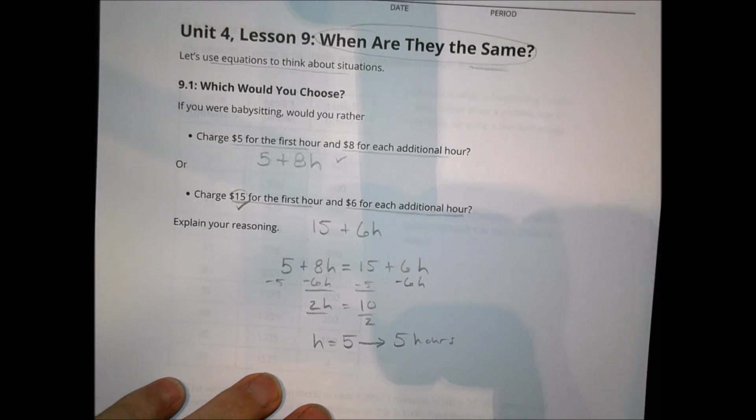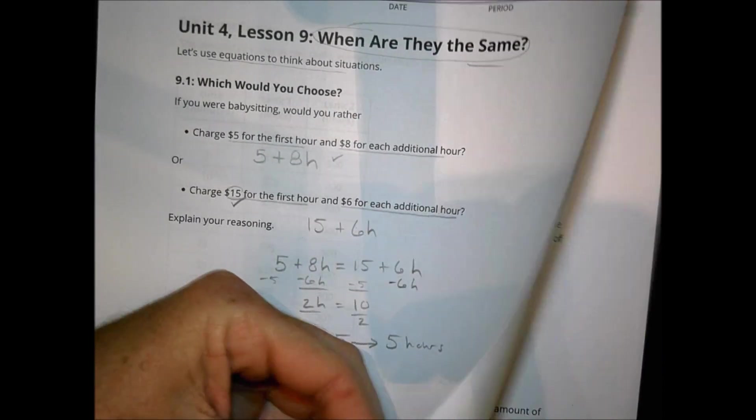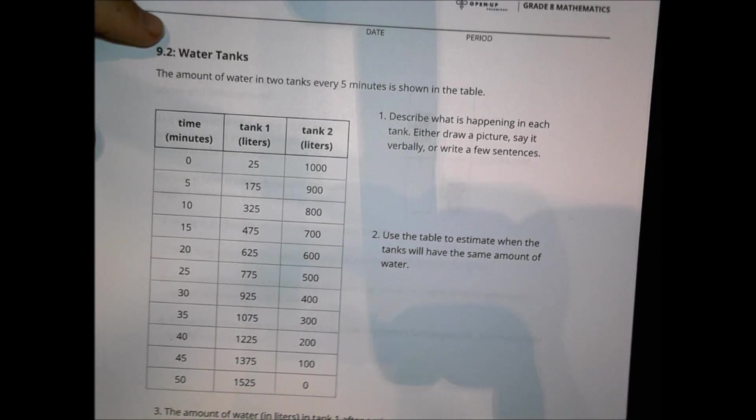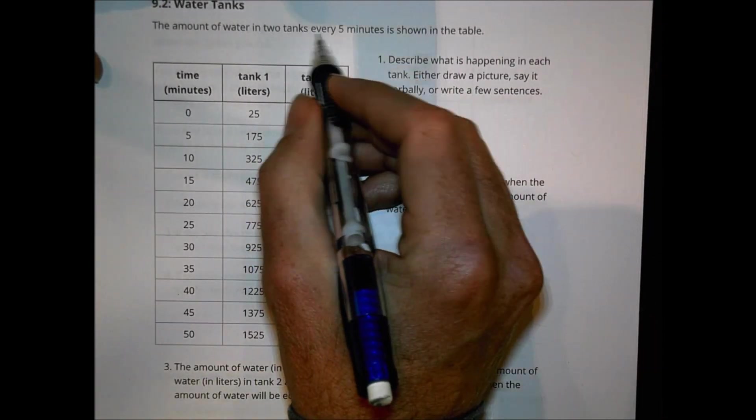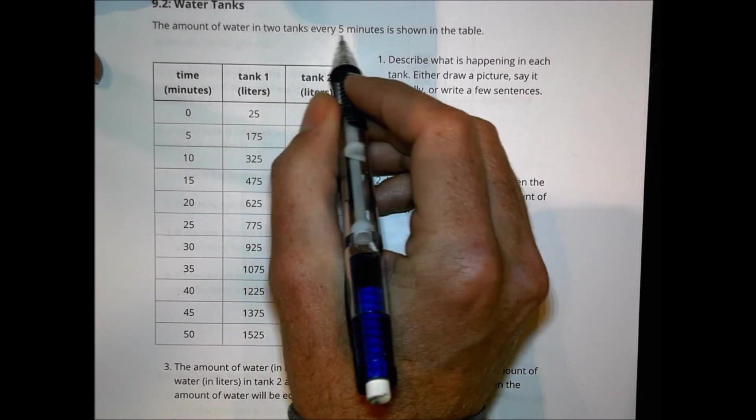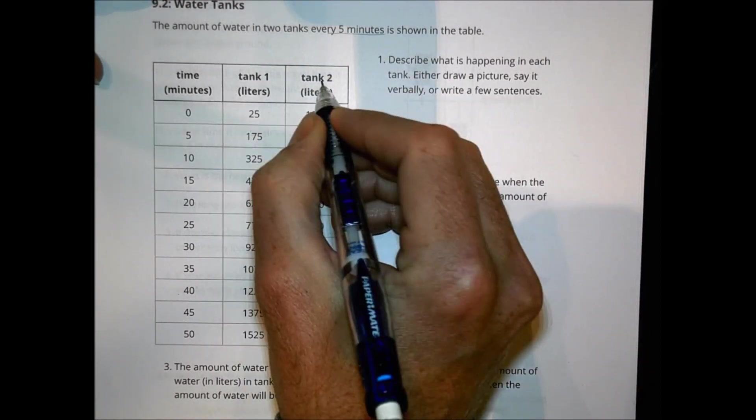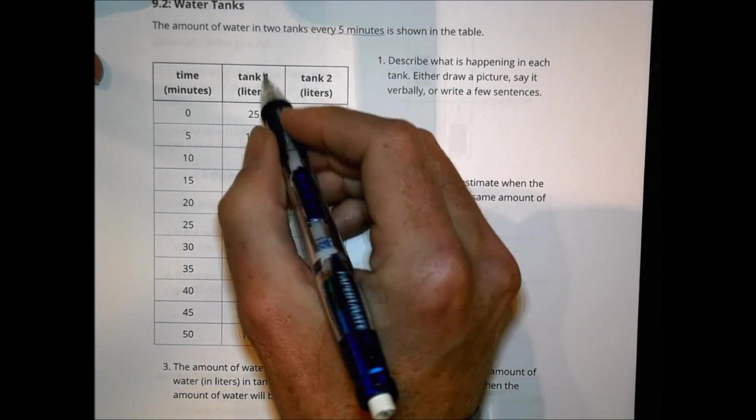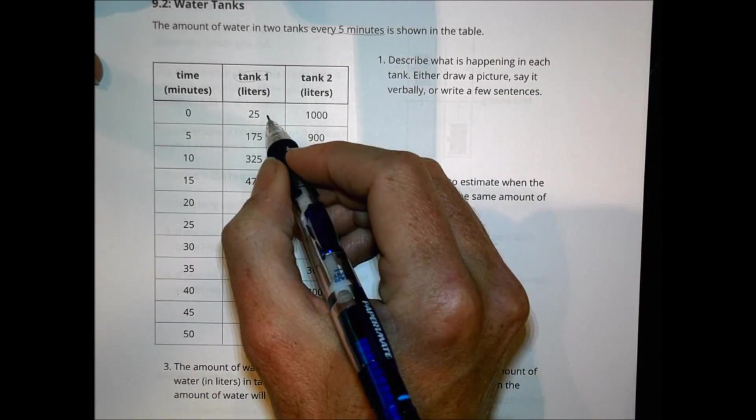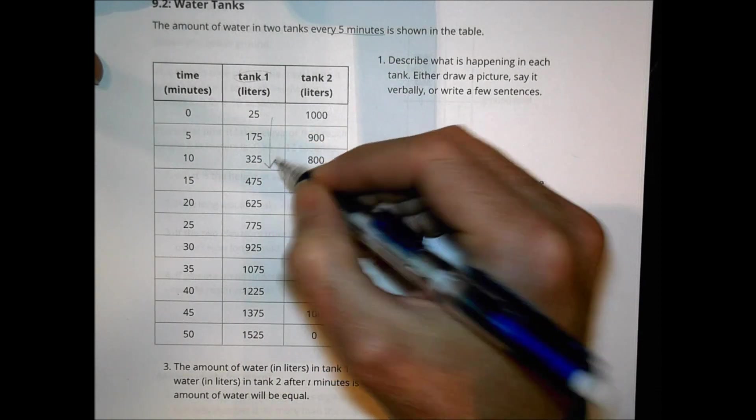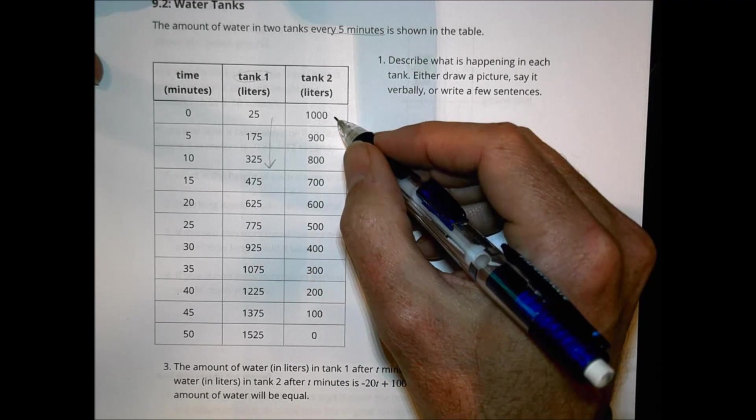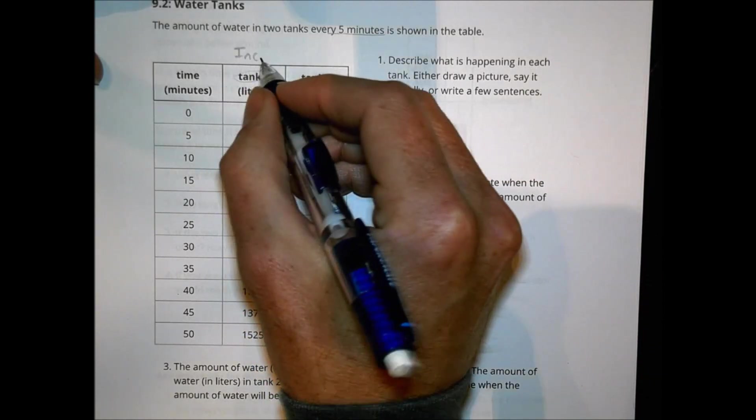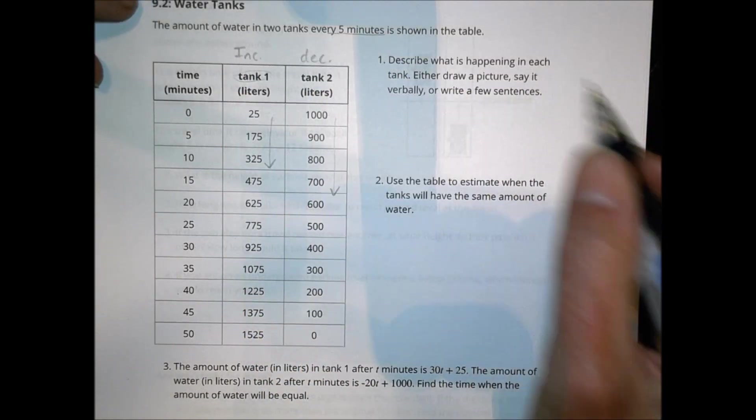Let's take a look at the next activity here. Lesson 2 on water tanks. Similar idea, except now instead of talking about money, you're looking at 2 water tanks. The amount of water is measured every 5 minutes as shown on the table. Here's tank 1 and here's tank 2. We have to describe what is happening in each tank. We look at tank 1, we can see that at the beginning it has 25 and it seems to be increasing as time goes on. Whereas tank 2 starts at 1000 liters and seems to be decreasing. So we would notice here that this is an increase and this one here is a decrease in terms of the overall amount of water in the tank.